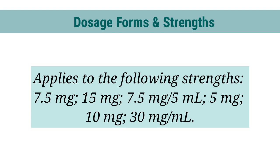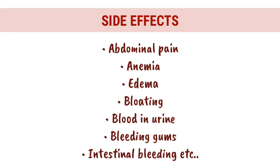Dosage forms and strengths: 7.5 mg, 15 mg, 7.5 mg/5 ml, 5 mg, 10 mg, 30 mg per ml. Side effects include: abdominal pain, anemia, edema, bloating, blood in urine, bleeding gums, and intestinal bleeding.